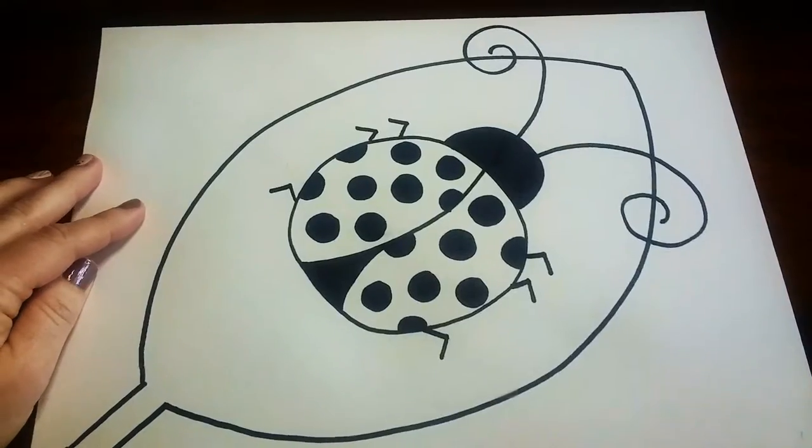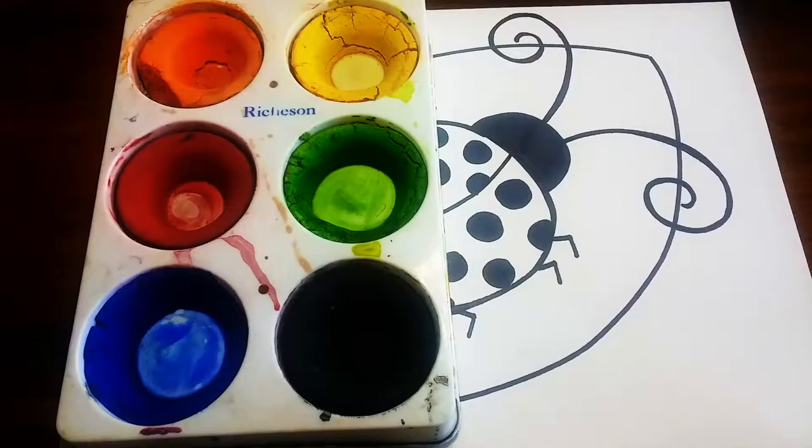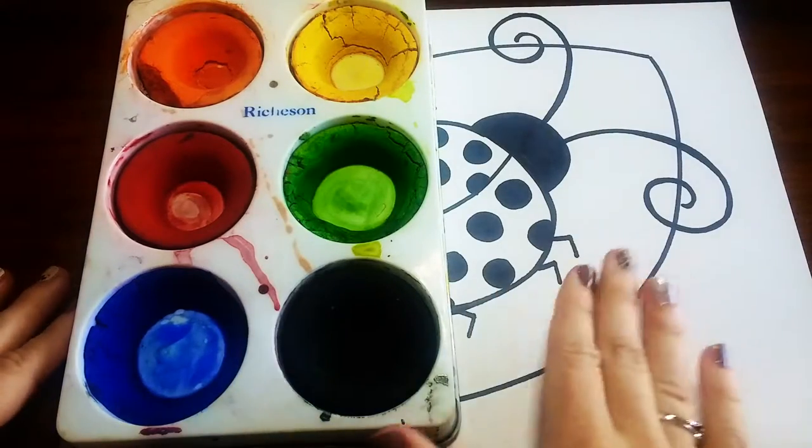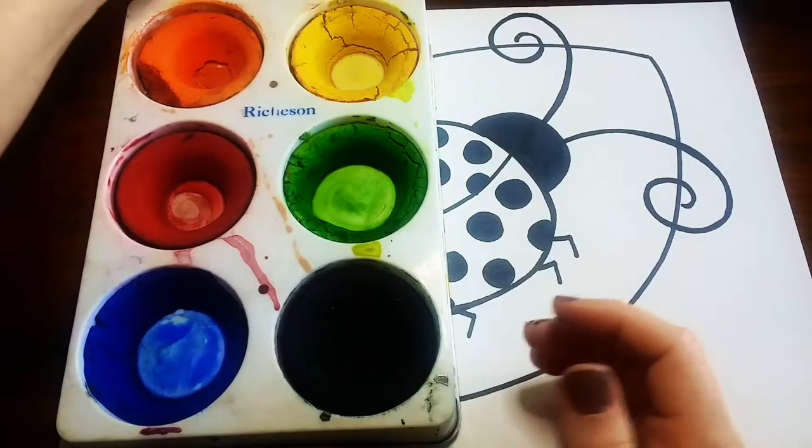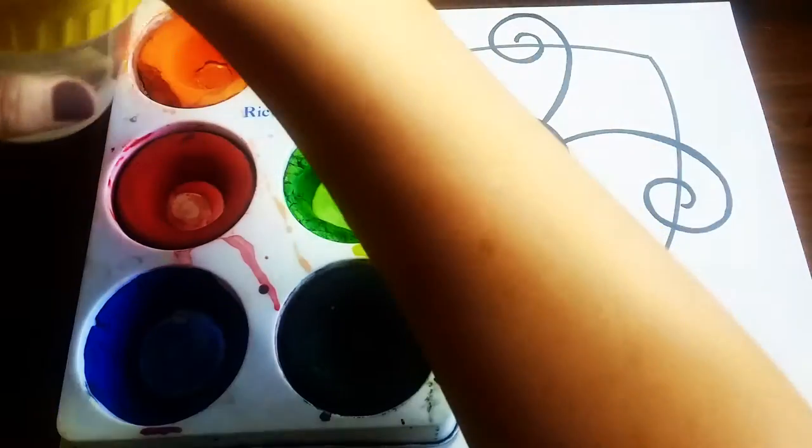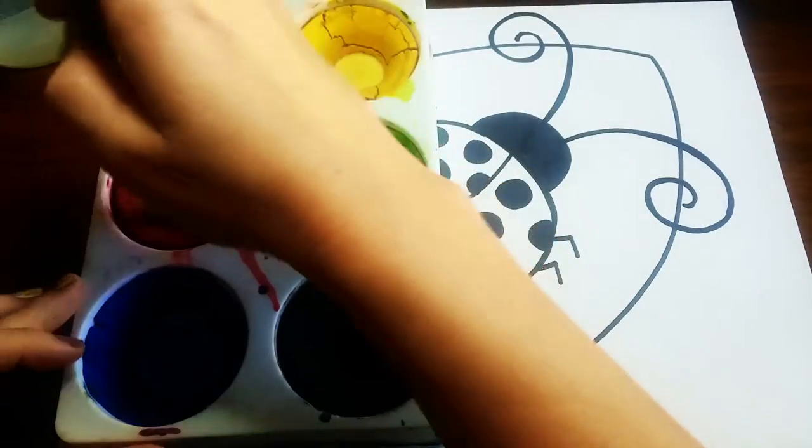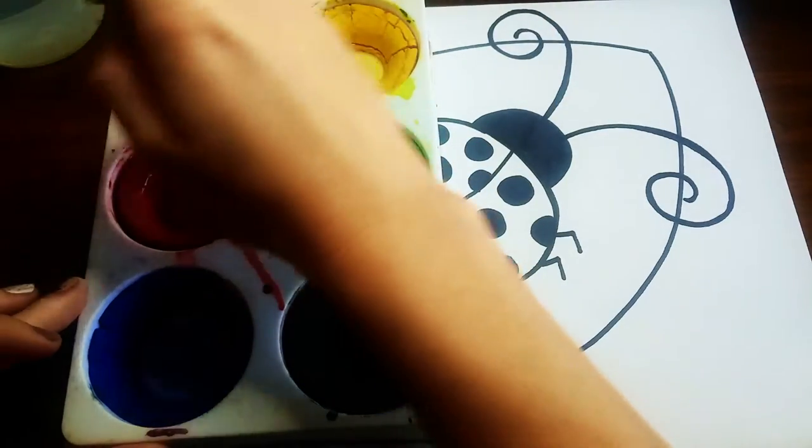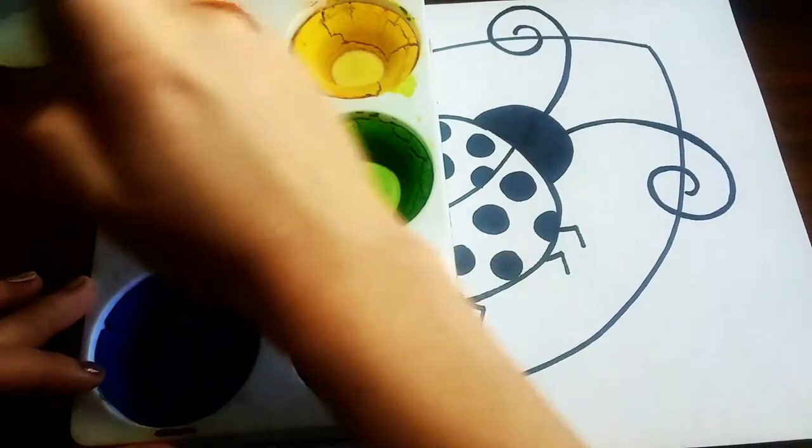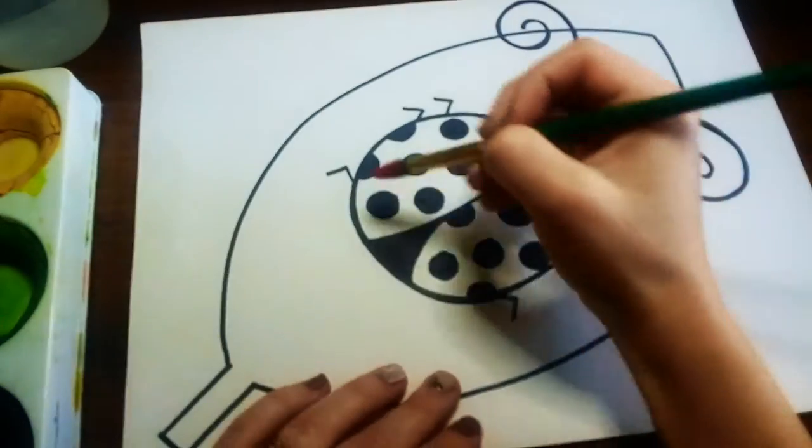Alright so now our ladybug is ready to be painted. We are going to be using these tempera cakes to paint our picture and of course you're gonna need some water with this. So I'm gonna start by painting the ladybug. So what I'm gonna do is add some water to my paintbrush and then swirl this around in the tempera cake and then I can start painting.